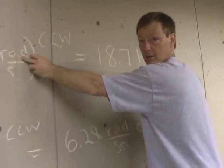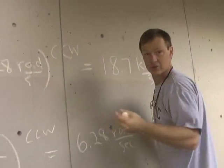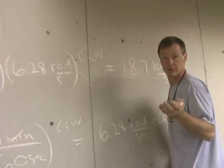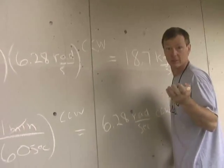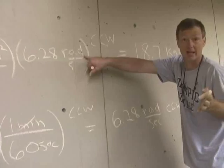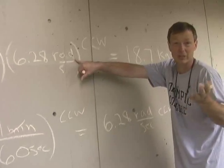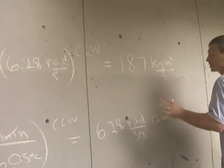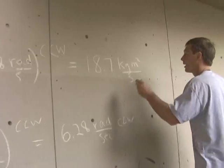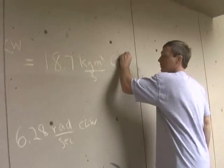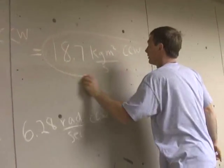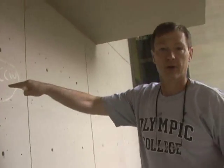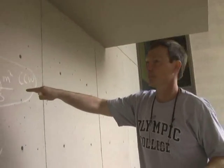I'm going to dump the radians. Radians are just an accounting technique we use to make sure we're reminded that we're using an angle, but it's just a ratio of two numbers. So you can drop it any time you want. That's our angular momentum — 18.7 kilogram meter squared per second, counterclockwise.